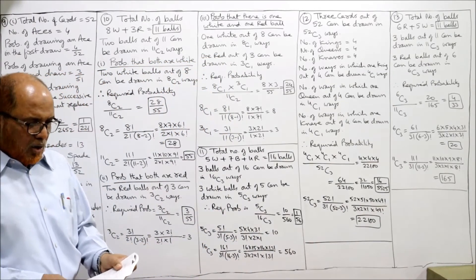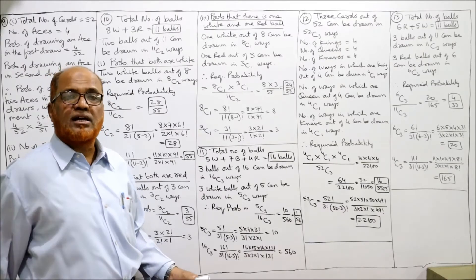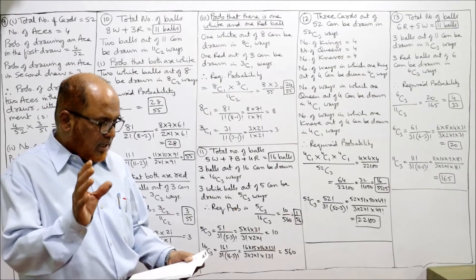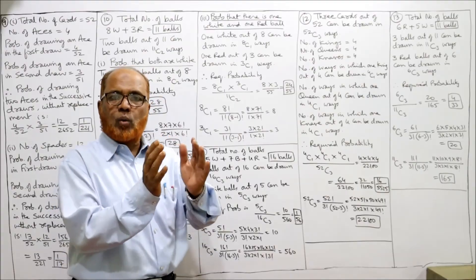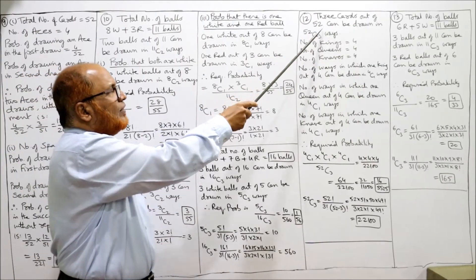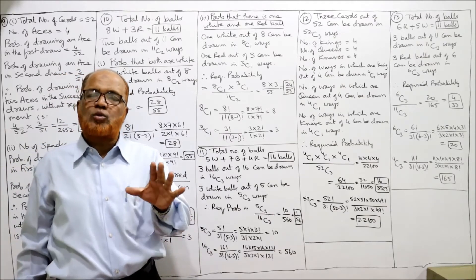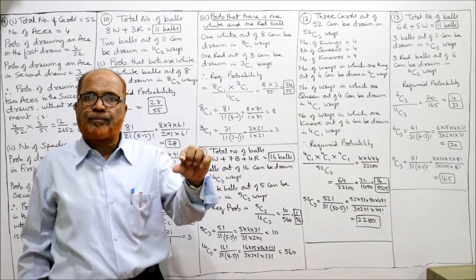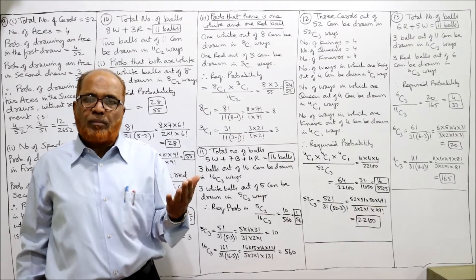Problem number 12: Three cards are drawn from a pack of 52 cards. Find the probability that they are a king, queen, and knave. Three cards out of 52 can be drawn in 52C3 ways — this is the denominator, the total number of outcomes. Now we determine the number of favourable cases.